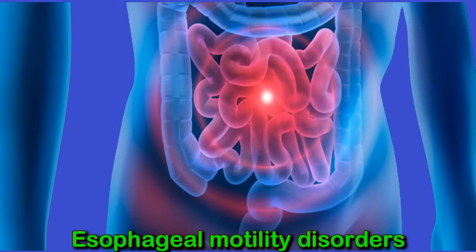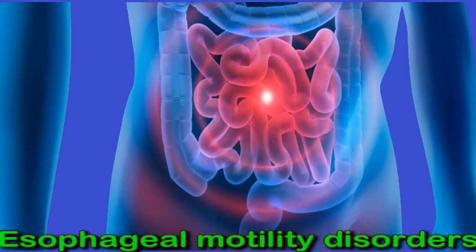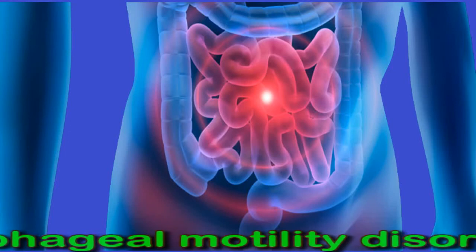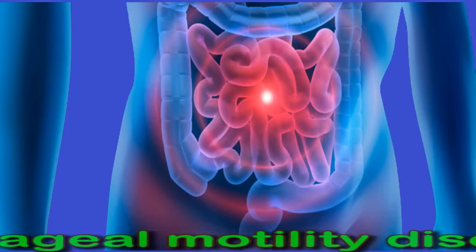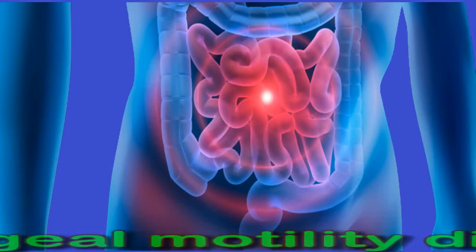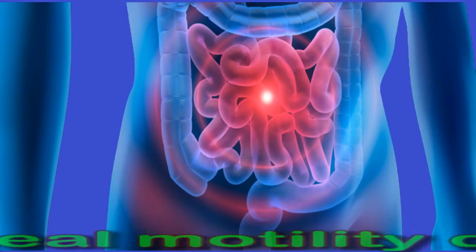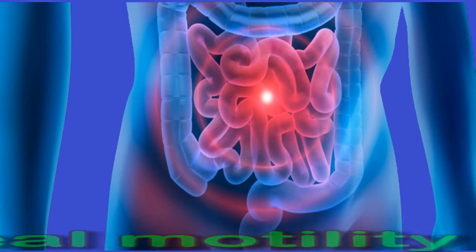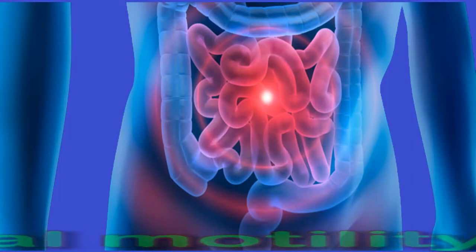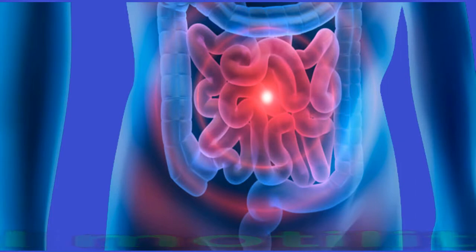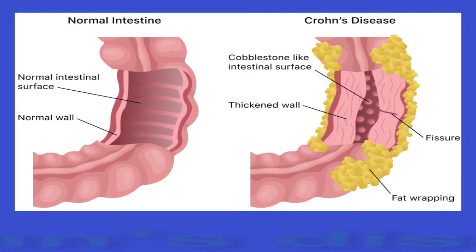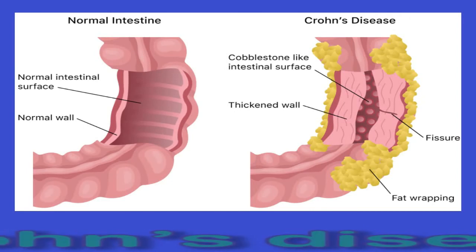Another example is opioid-induced dysmotility, which occurs as a result of opioid use. Treatments for these disorders vary depending on the specific cause. For example, doctors may help people taking opioids to taper their dose, while other types of motility disorder may require lifestyle changes or medications.